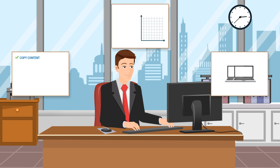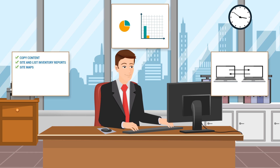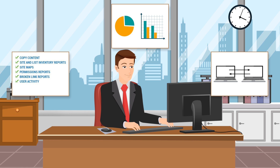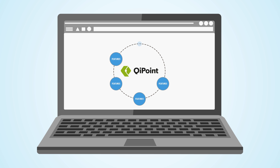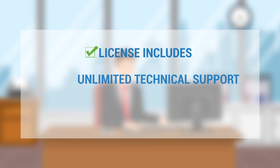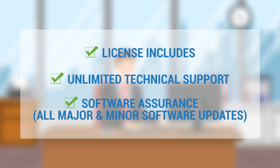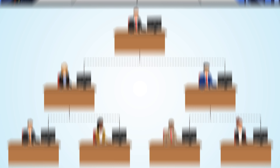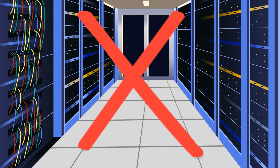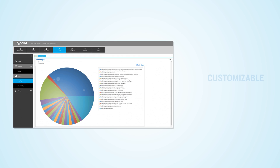It gives Mike everything he needs to better manage his organization's information, generate the reports he needs, and easily copy content from one site to another. The SharePoint Essentials Toolkit bundle includes all current and future components of the suite, so Mike doesn't have to worry about upgrading or paying for extra features. The license also includes unlimited technical support and software assurance. It's simple to use for site owners and administrators of all technical levels, and it doesn't require any server-side installation. The feature-rich, detailed, and customizable reports are simple to generate and fully exportable.